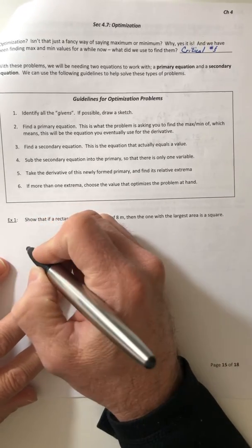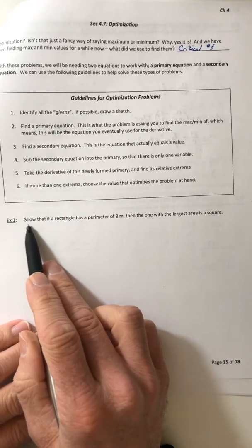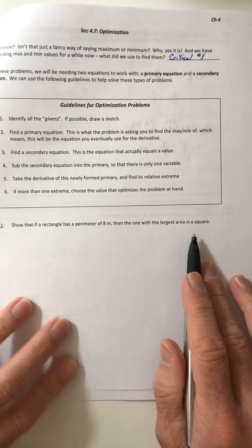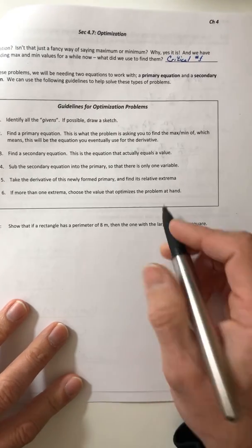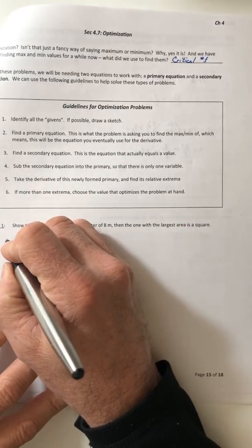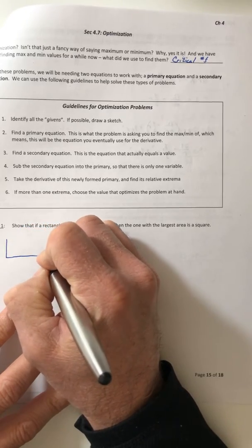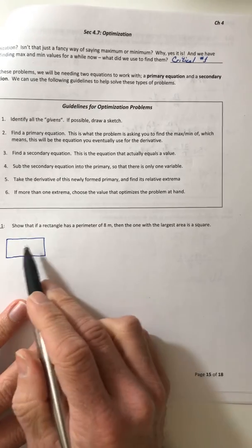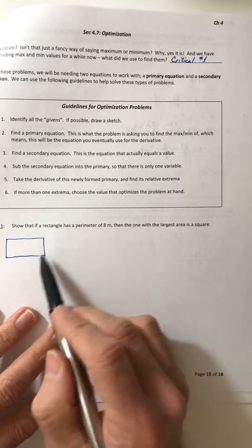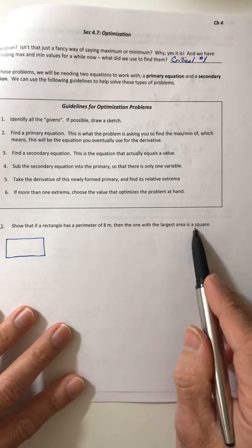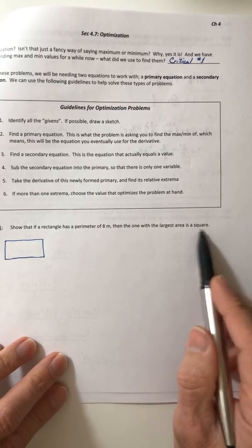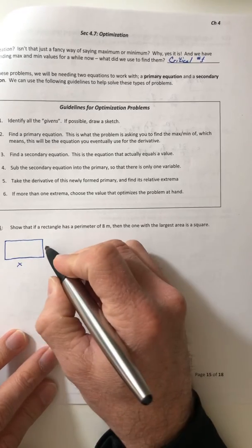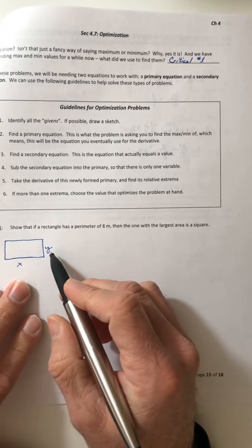Let's try this out. Show that if a rectangle has a perimeter of 8 meters, then the one with the largest area is a square. Here's your rectangle. When I'm done with it, hopefully I'm going to show that the rectangle I've drawn is going to end up being a square. So don't draw a square, that's what you're trying to prove. Start with a rectangle and label it with some sides, x and y or whatever letters you choose.